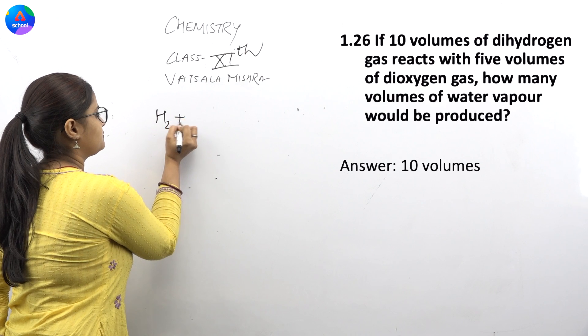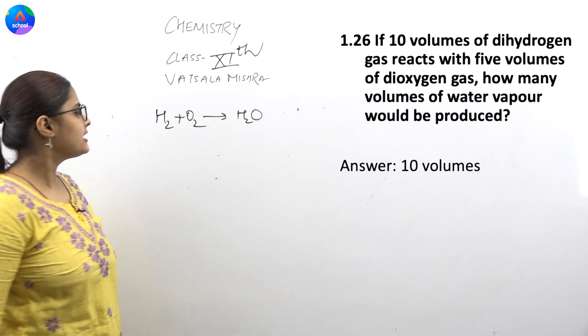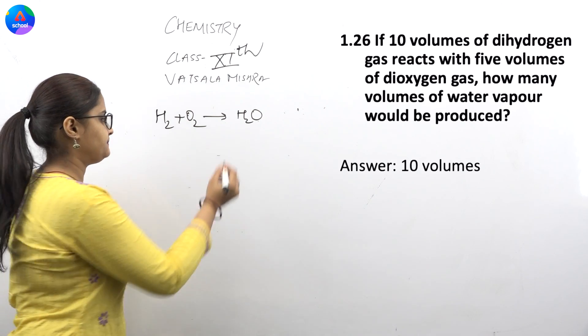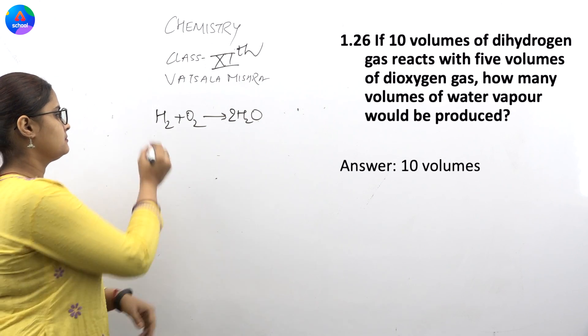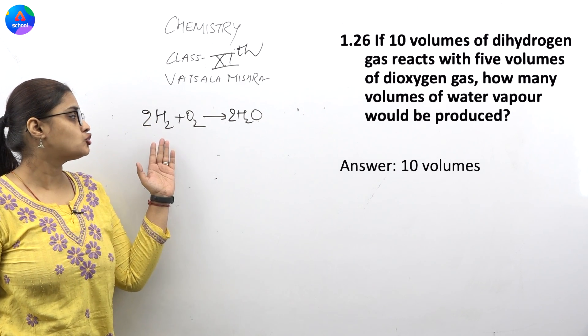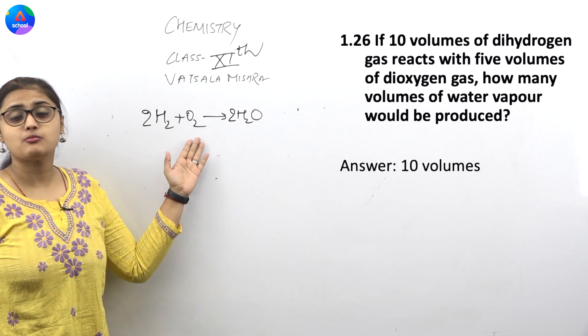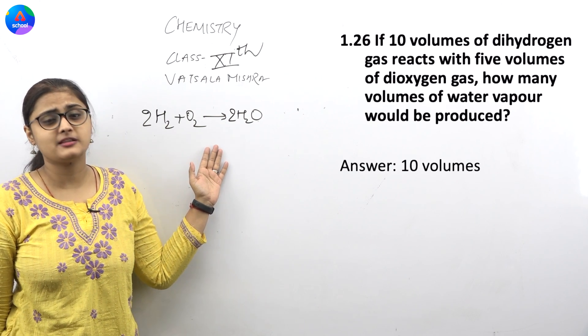First, write the reaction. The reaction is 2H2 + O2 → 2H2O. So if you have 2 moles of hydrogen with 1 mole of oxygen, then you have 2 moles of water vapor. Just focus on this, the answer will come.